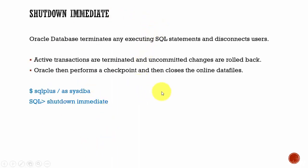The first one: in the shutdown immediate mode, the Oracle database will terminate all the executing SQL statements and disconnect the users. All the active transactions which are running are terminated, and if necessary, the uncommitted changes are rolled back and it immediately performs a checkpoint and closes the online data files. It doesn't wait for any of the sessions or the transactions to complete.